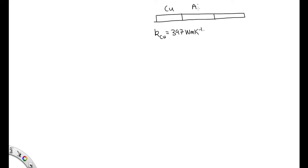We've got aluminum in the middle. K for aluminum is equal to 238 watts per meter per Kelvin.